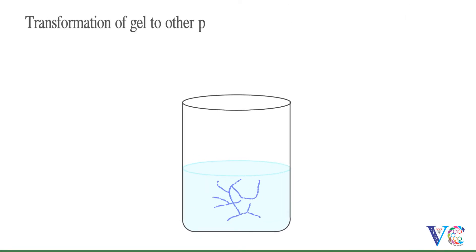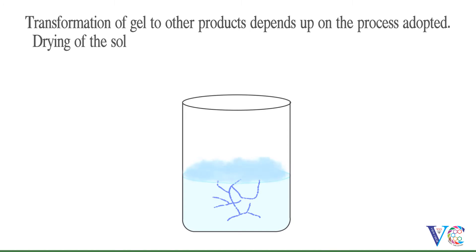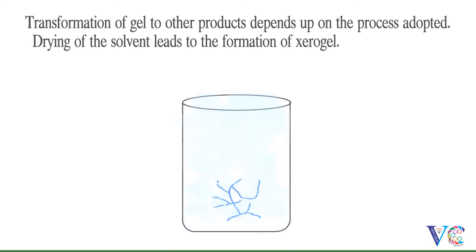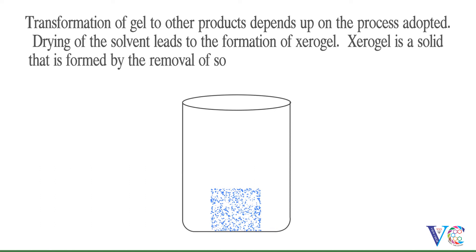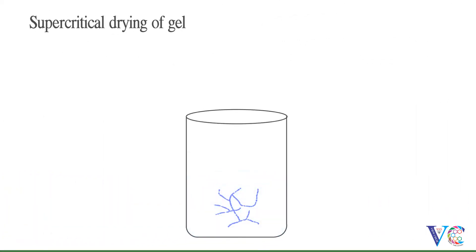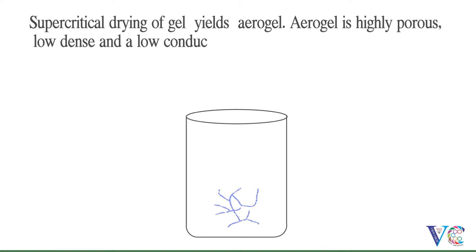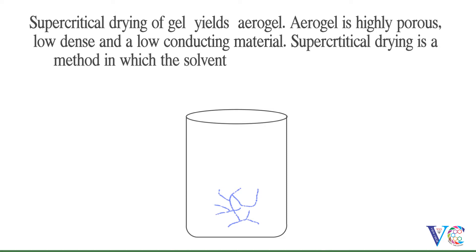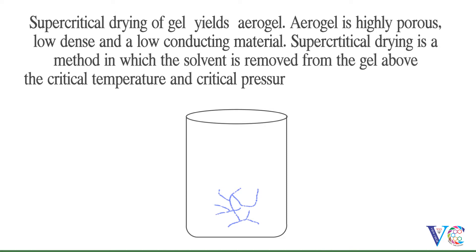The evaporation of solvent from the sol leads to the formation of a gel. Transformation of gel to other products depends on the process adopted. Drying of the solvent leads to the formation of xerogel — a solid formed by the removal of solvent from a sol at ambient temperature. Supercritical drying of gel yields aerogel, which is highly porous, low-density, and a low-conducting material. Supercritical drying is a method in which the solvent is removed above the critical temperature and critical pressure of the dispersion medium.